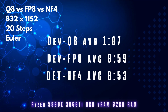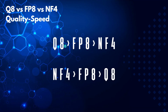Now talking about inference speed — the time it takes to generate an image — based on my system: a Ryzen 5800X, 3060 Ti with 8 gigabytes VRAM, and 32 gigabytes of system RAM. At a size of 832 by 1152, 20 steps using Euler: the Q8 averages about 1 minute 7 seconds, FP8 is 59 seconds, and NF4 is 53 seconds. In terms of quality, the Q8 is closest to the original FP16, followed by FP8, then NF4. For speed, NF4 is fastest, followed by FP8, then Q8.